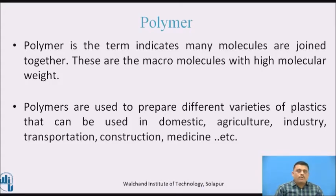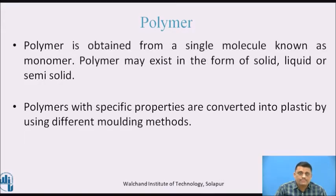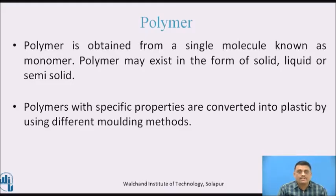What do you mean by polymer? Polymer is the term that indicates many molecules are joined together. These are macromolecules with high molecular weight. Polymers are used to prepare different varieties of plastics that can be used in domestic, agriculture, industry, transportation, construction, medicine, etc. Polymers are macromolecules which are formed by linking together several molecules. A polymer is obtained from a single molecule which is known as a monomer. Polymers may exist in the form of solid, liquid, or semi-solid. Polymers with specific properties are converted into plastic by using different molding methods.